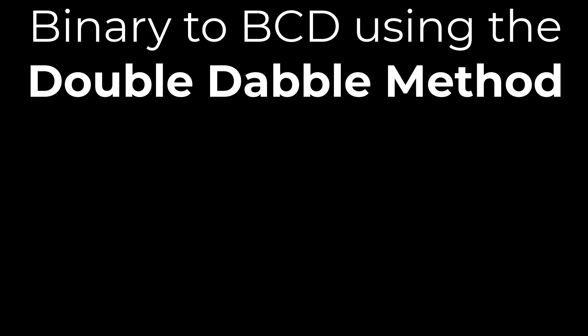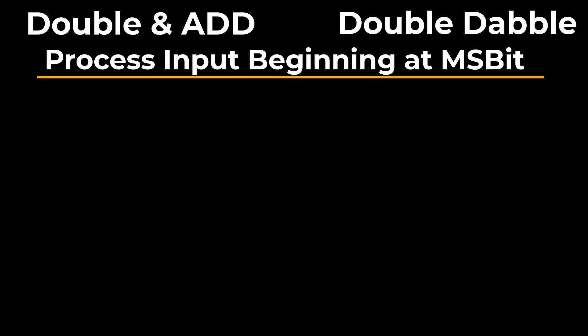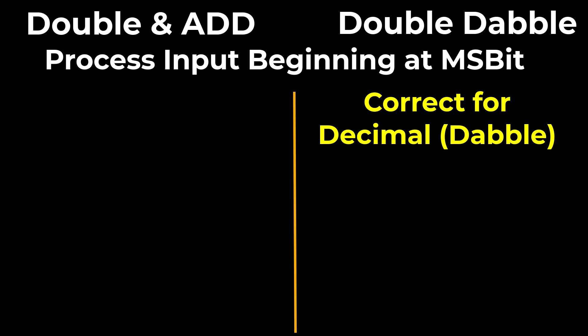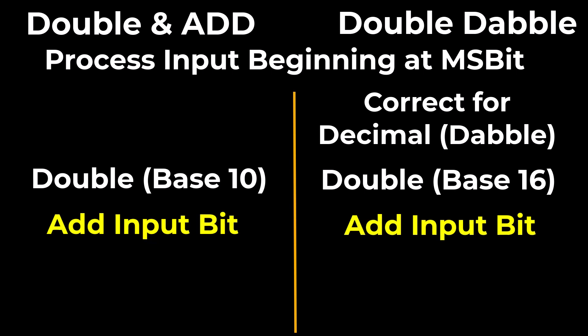Let's compare the steps for both methods. In the double and add and the double dabble method, the first thing we do is process the input stream starting with the most significant bit. But in the double dabble method, we preemptively adjust the decimal, which is what the dabble came from. So we're preemptively going to adjust that output value. And then we double the value for both methods.